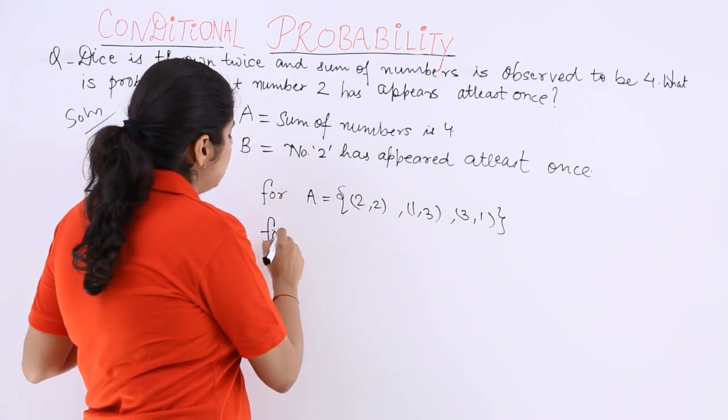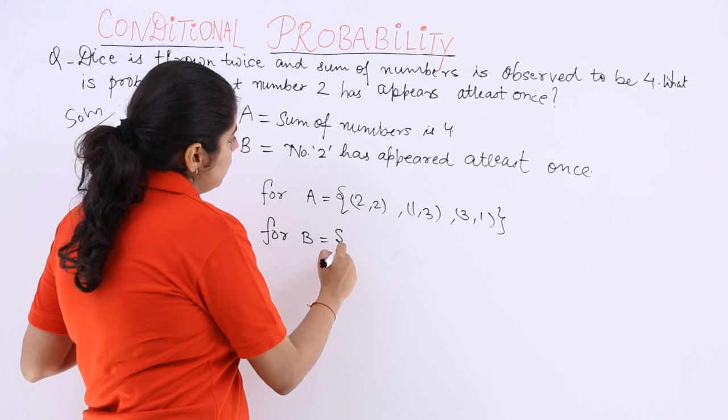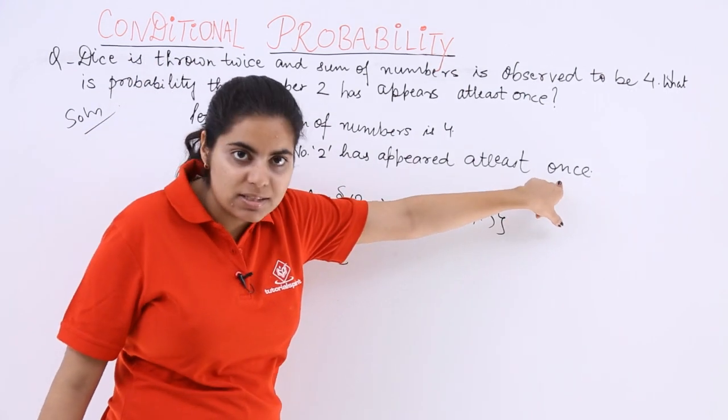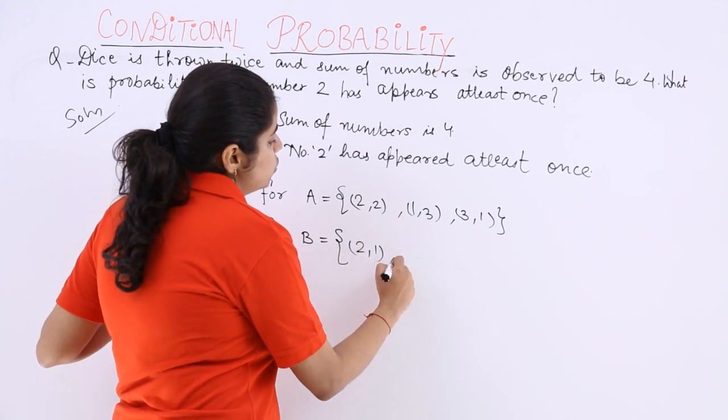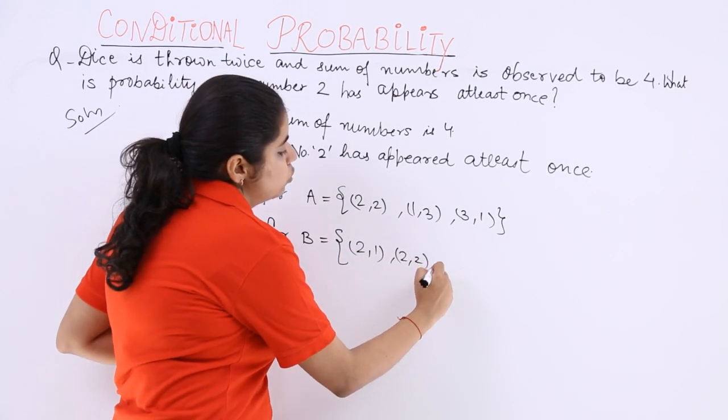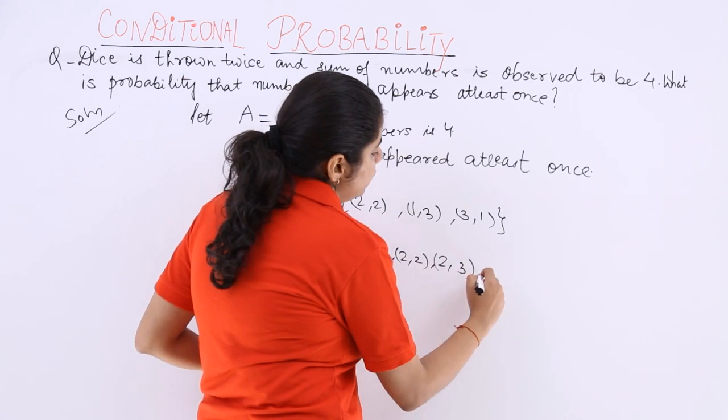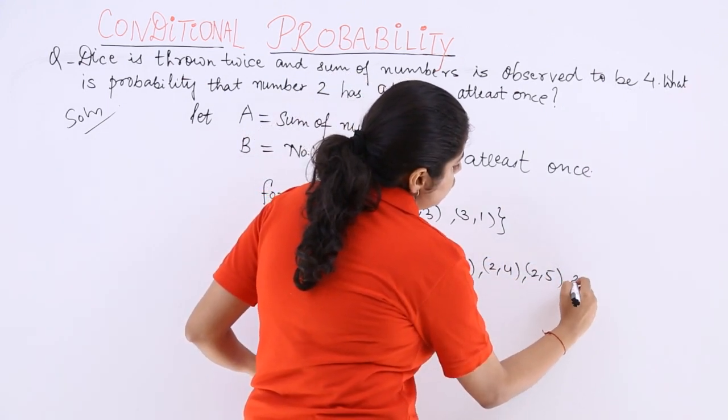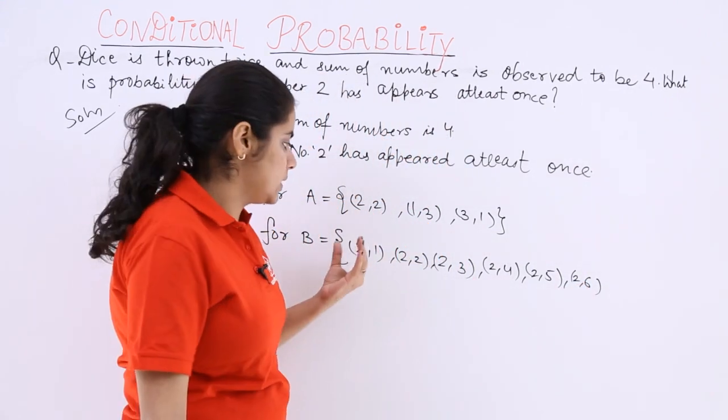Now for event B, number two has appeared at least once. Means two should appear. So 2, 1, 2, 2, 2, 3, 2, 4, 2, 5, 2, 6. Two has appeared at least once.